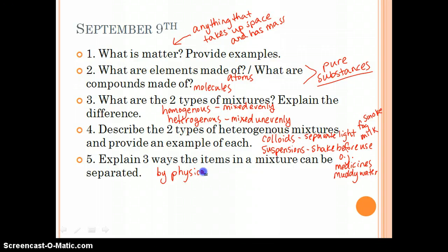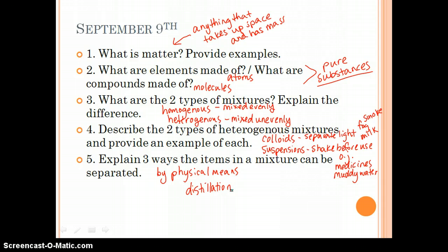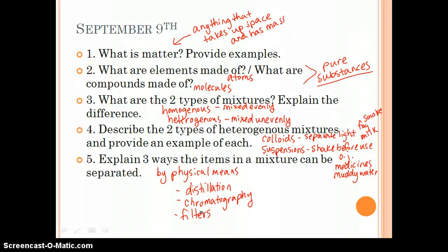So how can items in a mixture be separated? By physical means. So three possibilities would be distillation. Distillation where you evaporate off the water and then you get the pure water when it cools. And you have maybe your salt or your sugar in the other container. Chromatography was one. We talked about filters as one as well. So look back over those. I think we gave about five or six in class. Take a look at those examples in your notes.